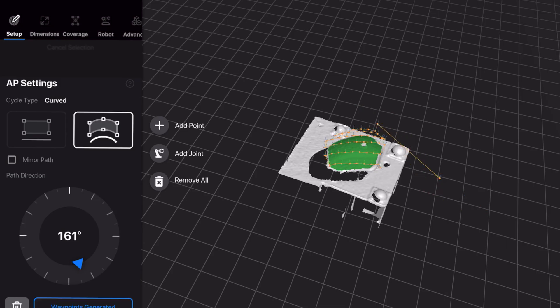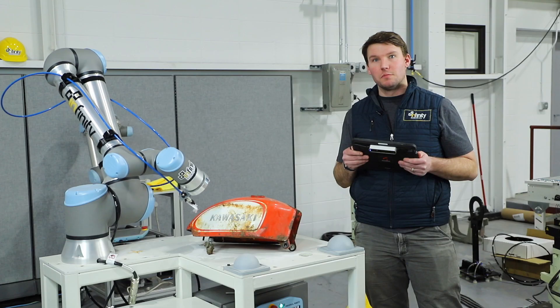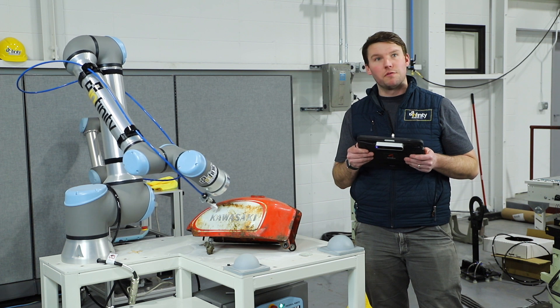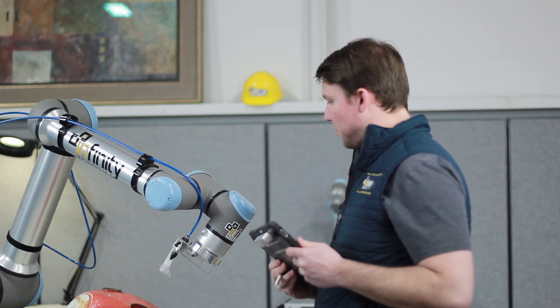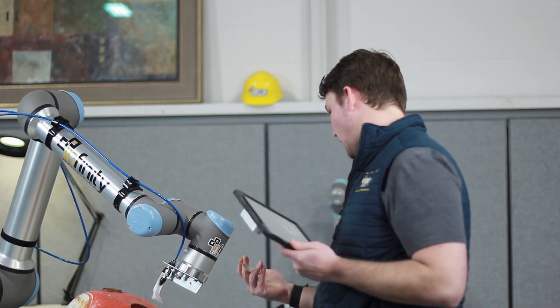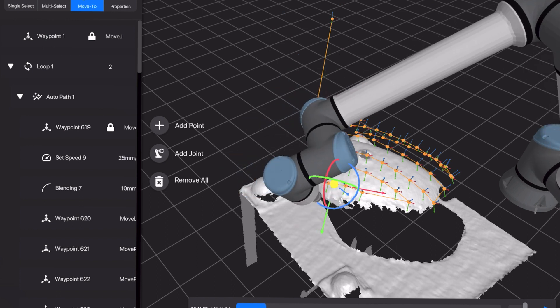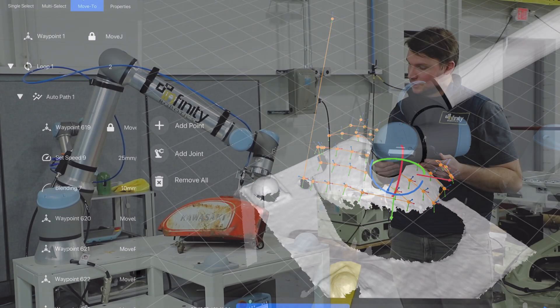It's really exciting software and it's going to save time for high mix, low volume customers across the board for Infinity Robotics. What we are showing here today is a spraying path, so we have the UR-10 following the contours of the gas can and doing what would be like a sandblast op or a paint operation.